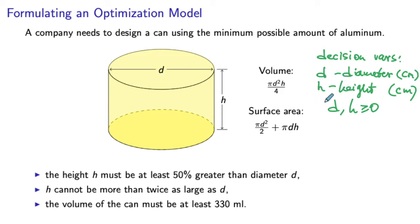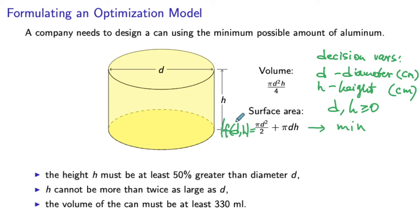When deciding on decision variables, we need to make sure they can be conveniently used to express our objective and constraints. Our objective is to minimize the surface area, which is naturally expressed through diameter and height. We denote the objective function f(d, h), and our goal is to minimize this function. The objective function is quadratic because it contains the terms d² and d*h — so it is a non-linear, quadratic objective.